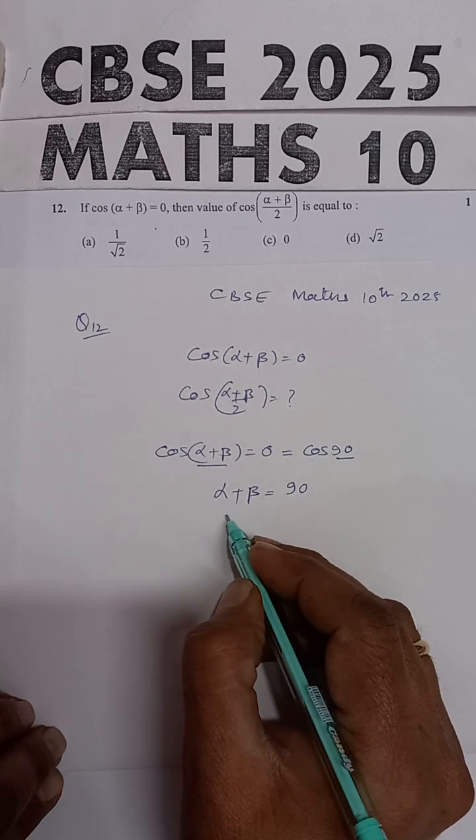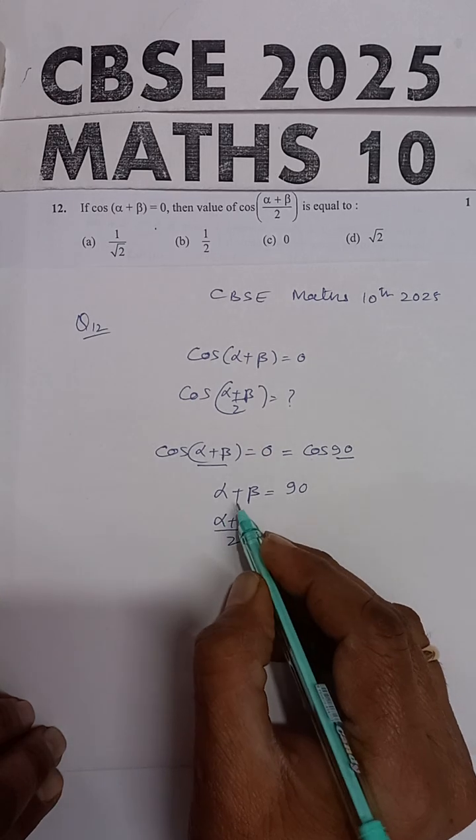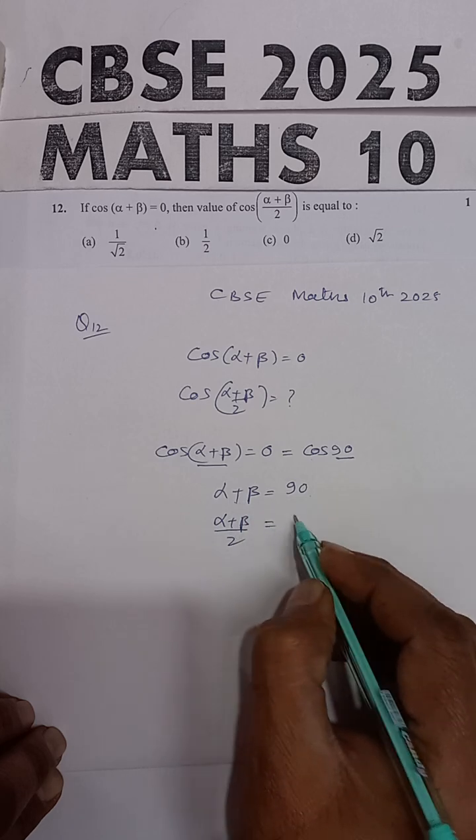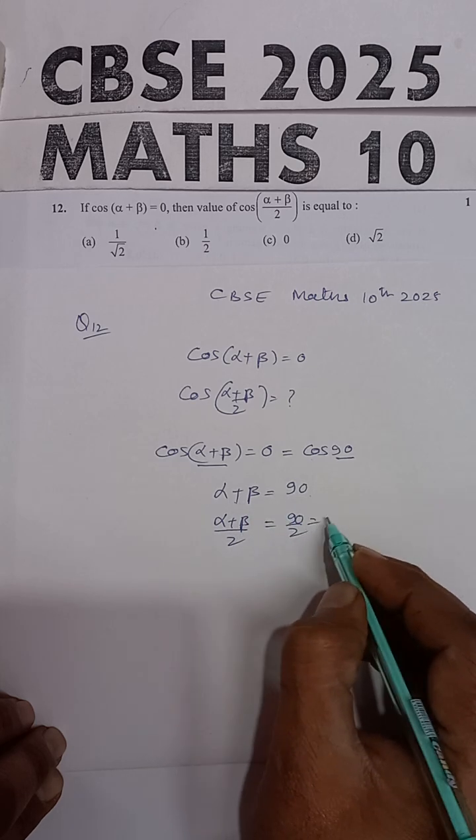And divide by 2 on both the sides, alpha plus beta upon 2. Dividing both sides by 2, this will be equal to 45.